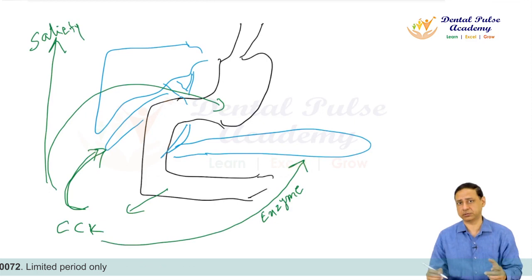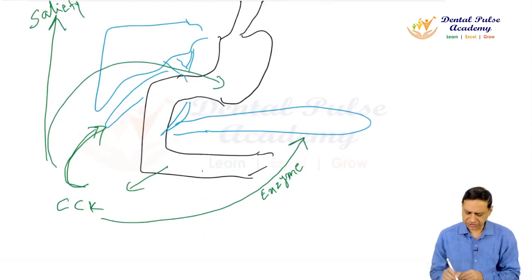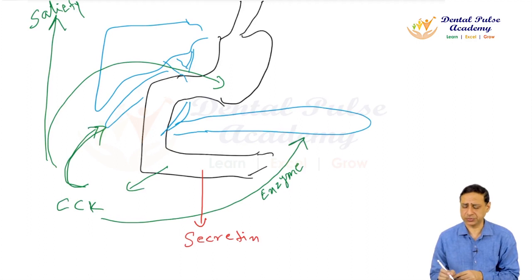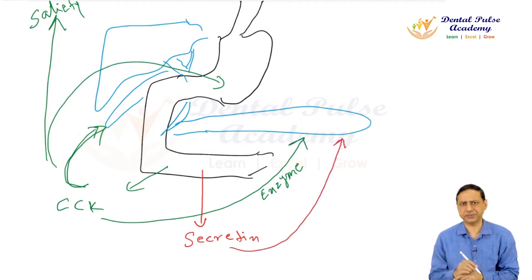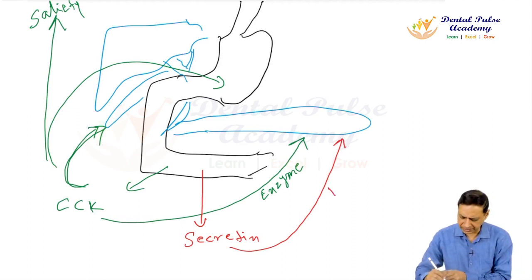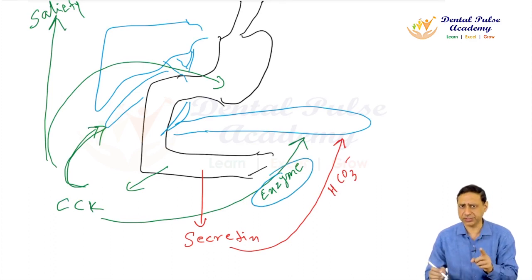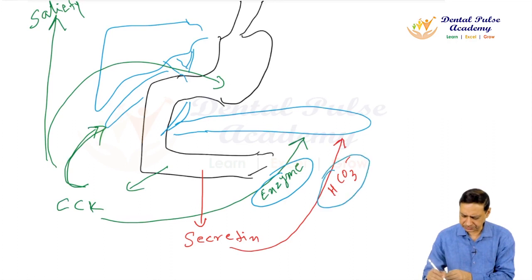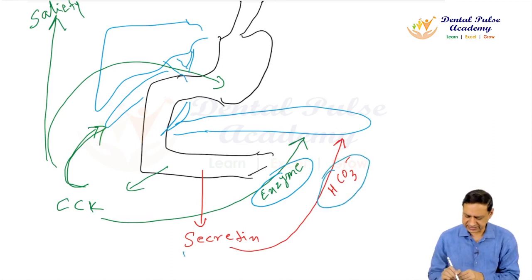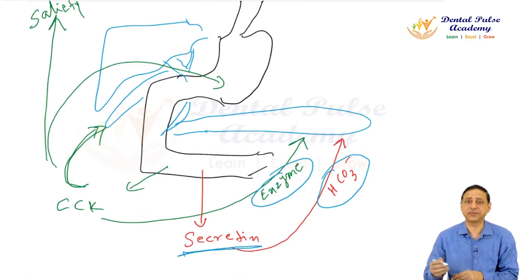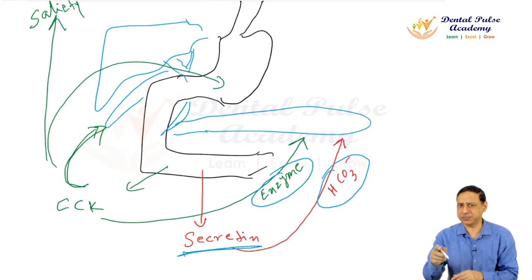Another hormone released from the small intestine is secretin. Its main function is to go to the pancreas and stimulate the release of bicarbonate. The release of enzymes from pancreas is due to cholecystokinin (CCK), but the release of bicarbonate from pancreas is the function of secretin. So secretin leads to pancreatic secretion rich in bicarbonate, while CCK leads to pancreatic secretion rich in enzymes.